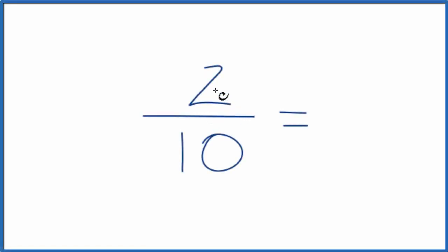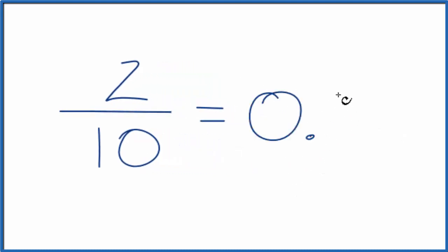In this video, we'll express the fraction 2 tenths as a decimal. So 2 divided by 10, what do we have in decimal form? We could just type 2 divided by 10 into our calculator and we get 0.2.